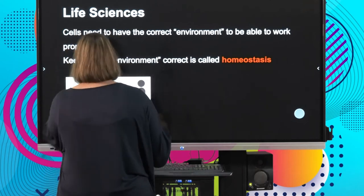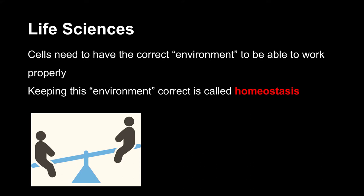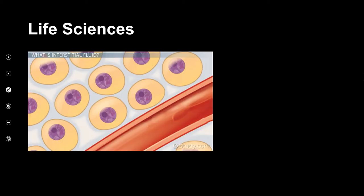When we talk about homeostasis, we refer to the internal environment — the environment that the cells find themselves in. This is the interstitial fluid, sometimes called intracellular fluid — all this liquid that surrounds the cell. This fluid must be balanced. It must have the right amount of glucose, the right amount of oxygen and carbon dioxide, and the right temperature.